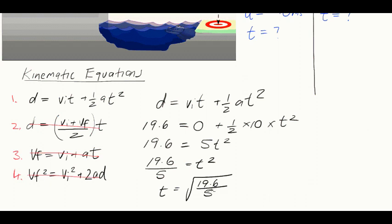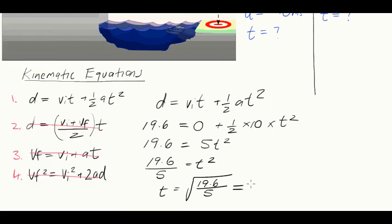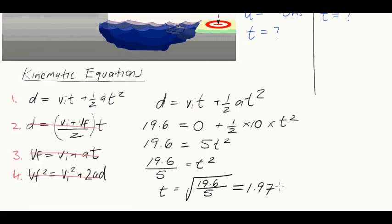Which means that t will be the square root of 19.6 divided by 5. At this point we would get the calculator. And we want to know what the square root of 19.6 divided by 5 is. So we get a time of 1.97989. So we'll just make that 1.9798989. That will do.